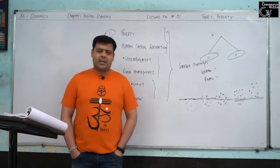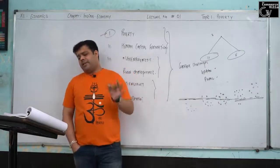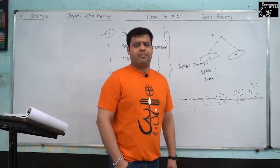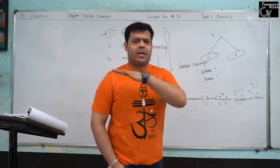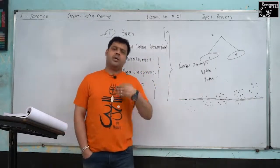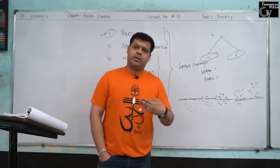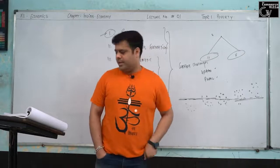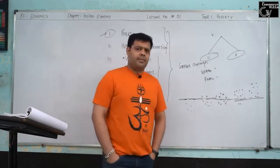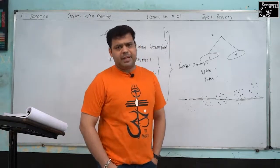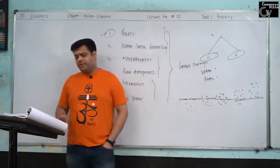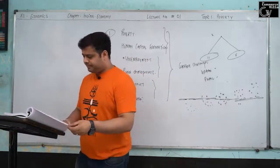Please underline: poverty line refers to the cut-off point. The poverty line is the cut-off point — it tells us who is poor and who is not poor. Please check the diagram with the figure given — the cut-off point is shown there.